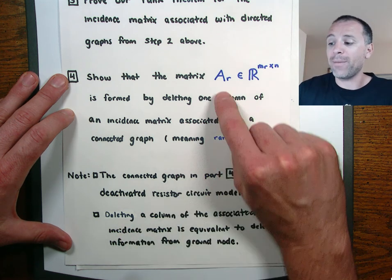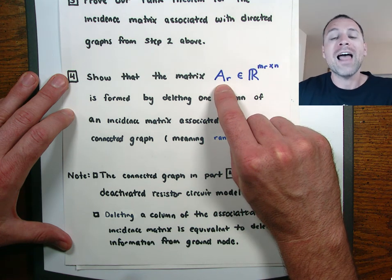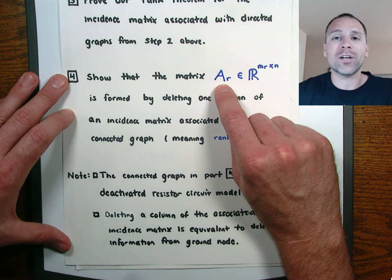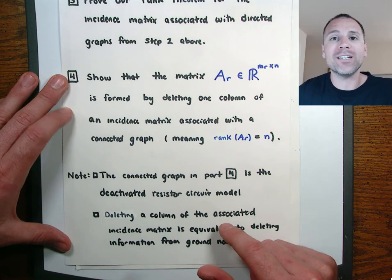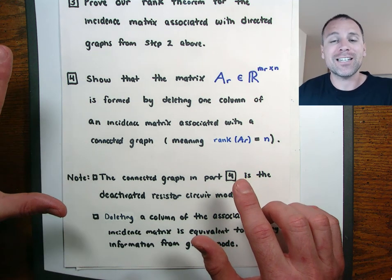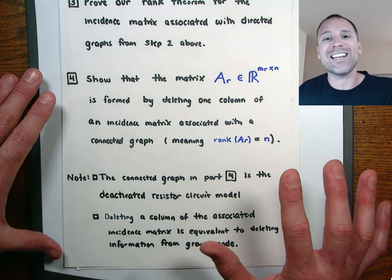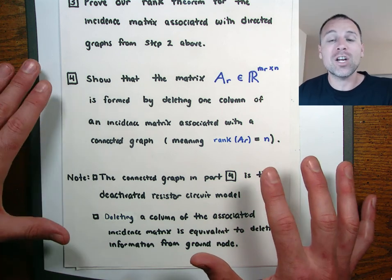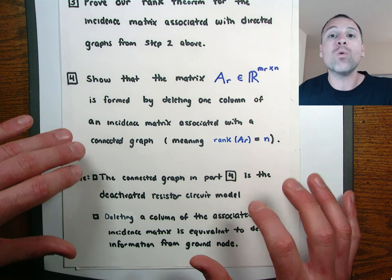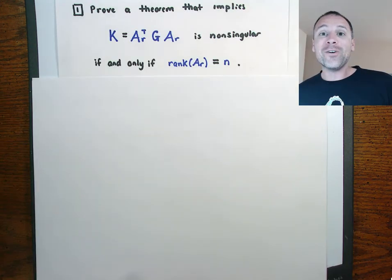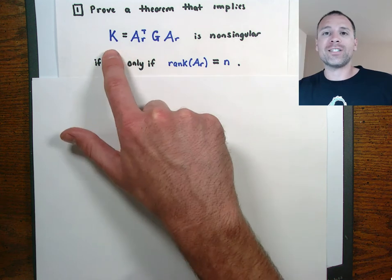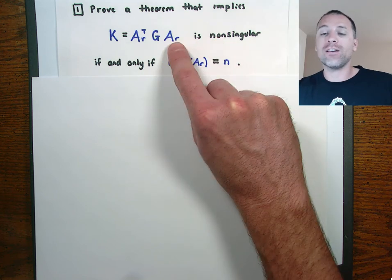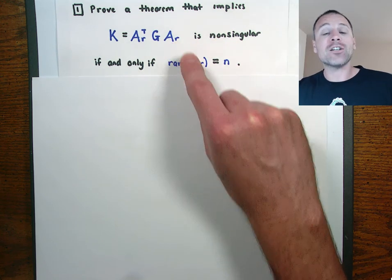When we delete a column of that matrix to form A sub R, that corresponds to grounding our circuit for the deactivated resistor circuit. The material from step 6 very much relates to the extensions for step 11 — steps 6 through 11 are designed to be interconnected. The focus of this current video is to show that K equals AR transpose G AR is non-singular if and only if A sub R has full column rank.